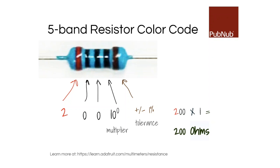For a five-band resistor, it's similar but more precise. For example: red (2), black (0), black (0), then a multiplier of black (10^0 = 1), so 200 × 1 = 200 ohms. And the last band is tolerance, in this case 1%.